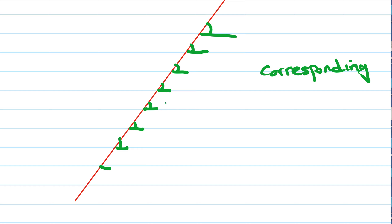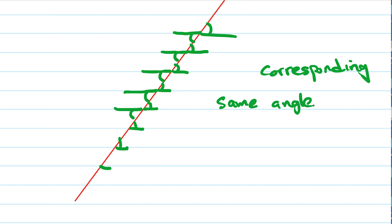Corresponding angles match in the same spot but on a different line — you go up a line or down a line. We could go to the other side and look below; there are angles formed on the bottom, and the repeating angle just keeps going down a level. So corresponding angles are really the same angles but on a different line.